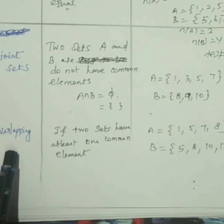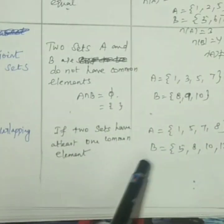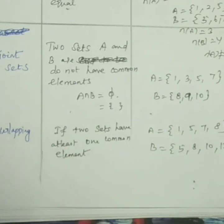Next, overlapping. Suppose at least one or two, one common part is there - that is called overlapping. If a common part is there, that is called overlapping. If no common part is there, that is called a disjoint set.